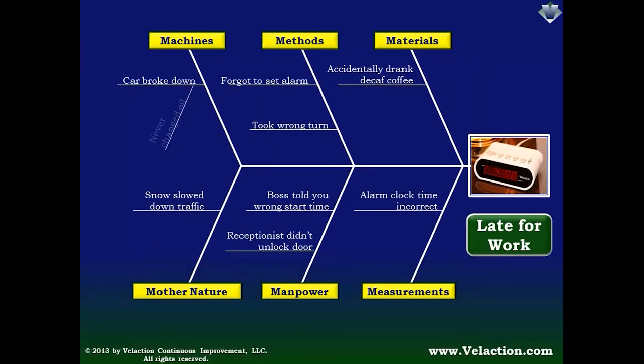At this point, you can continue drilling down into these issues. Simply draw another branch, or even multiple branches, off of each of these issues you've identified. And in fact, you can even add a branch on one of these secondary branches. In this example, you would look at why your car broke down, or why you accidentally drank decaffeinated coffee.